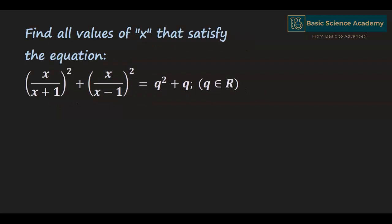In this video, we are going to discuss the question: find all values of x that satisfy the equation x divided by (x+1) whole squared plus x divided by (x-1) whole squared equals q squared plus q, where q belongs to R.